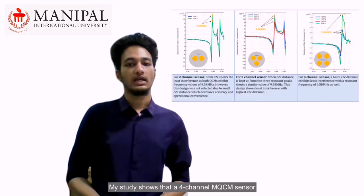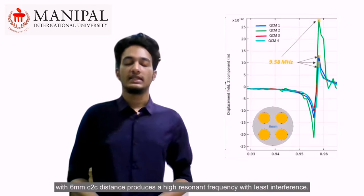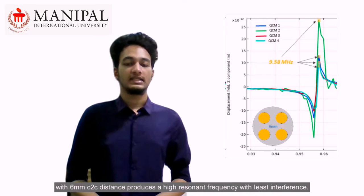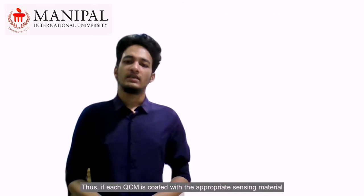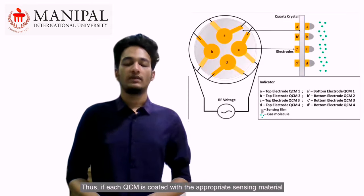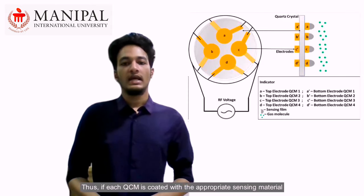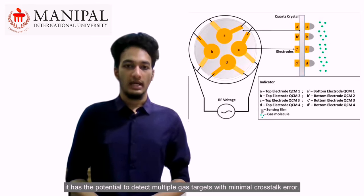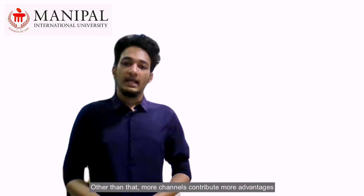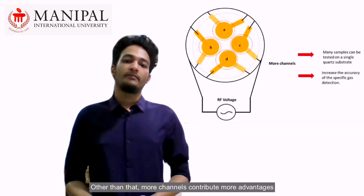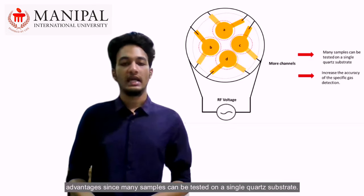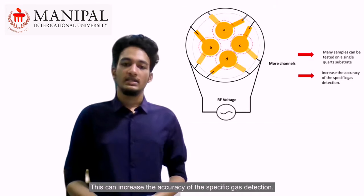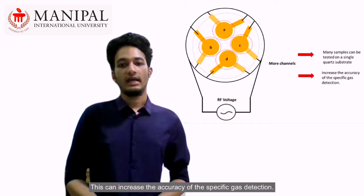My study shows that a four-channel MQCM sensor with 6 mm C2C distance produces a high resonant frequency with least interference. Thus, if each QCM is coated with the appropriate sensing material, it has the potential to detect multiple gas targets with minimal crosstalk error. Other than that, more channels contribute more advantages since many samples can be tested on a single quartz substrate. This can increase the accuracy of the specific gas detection.